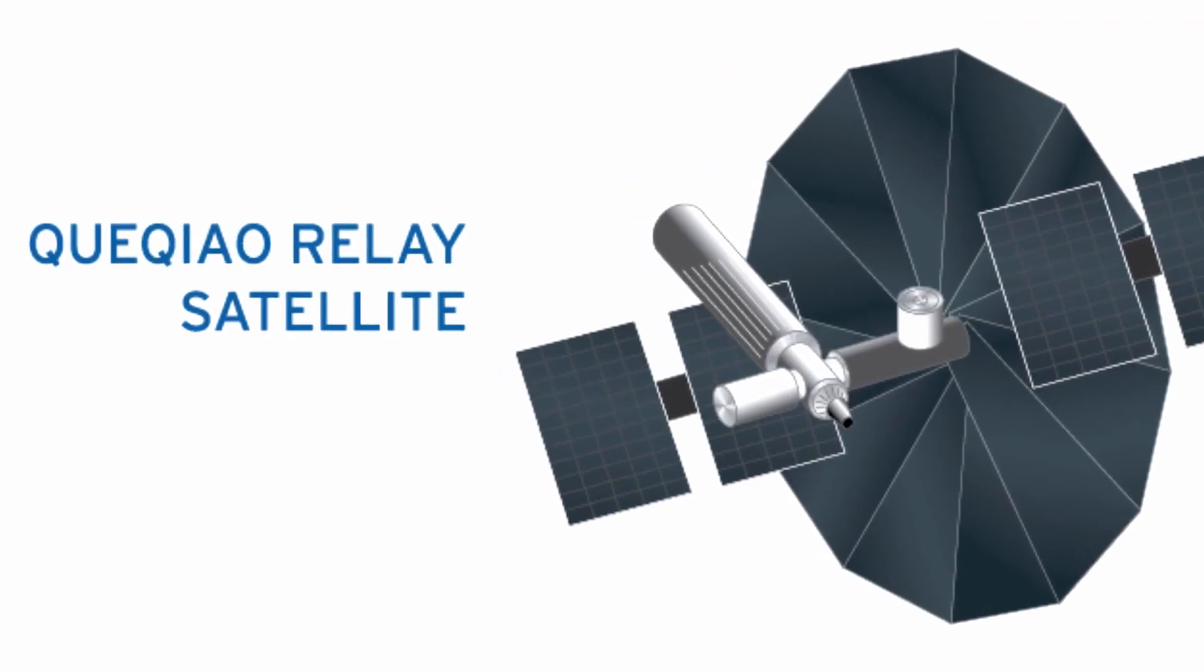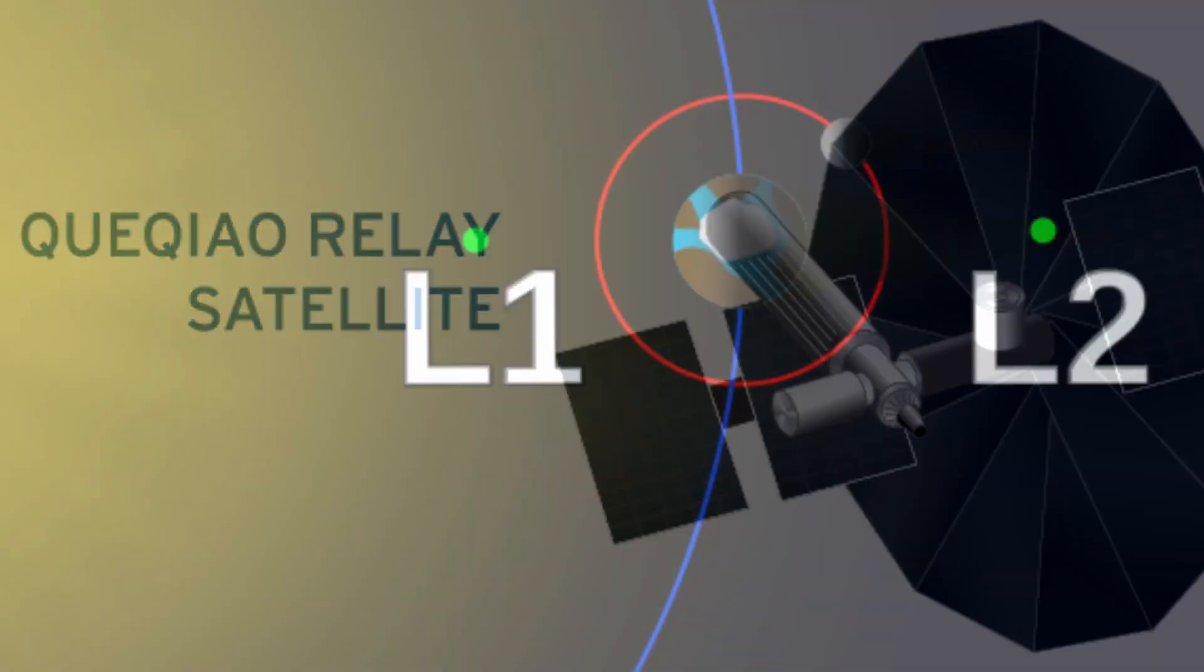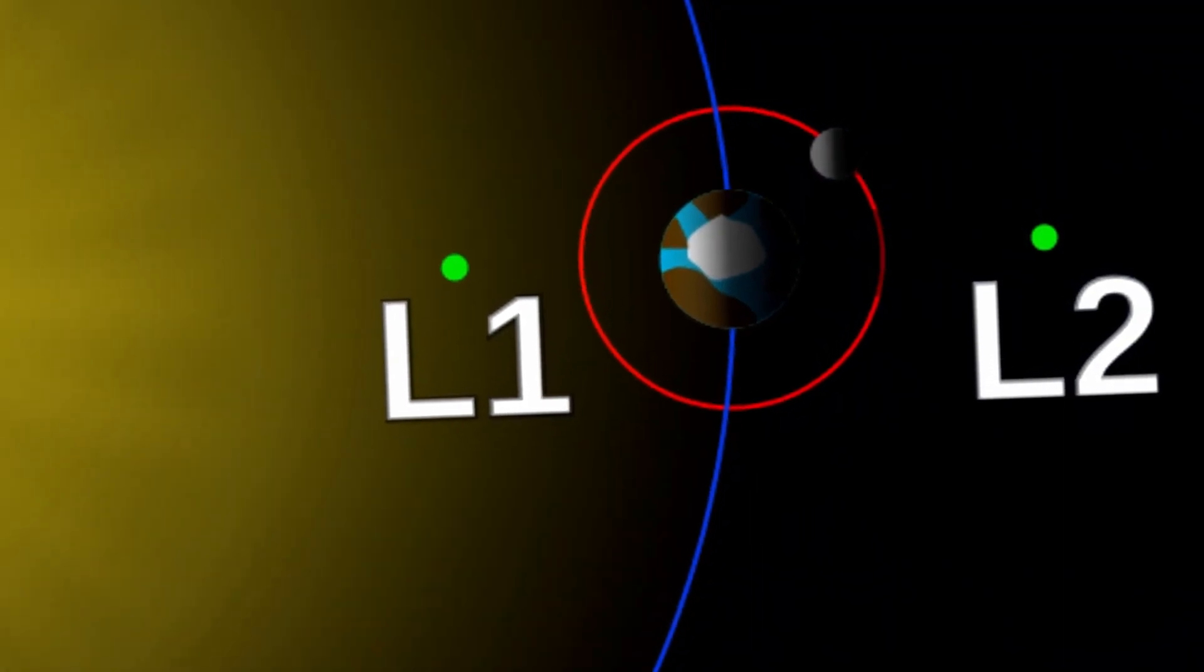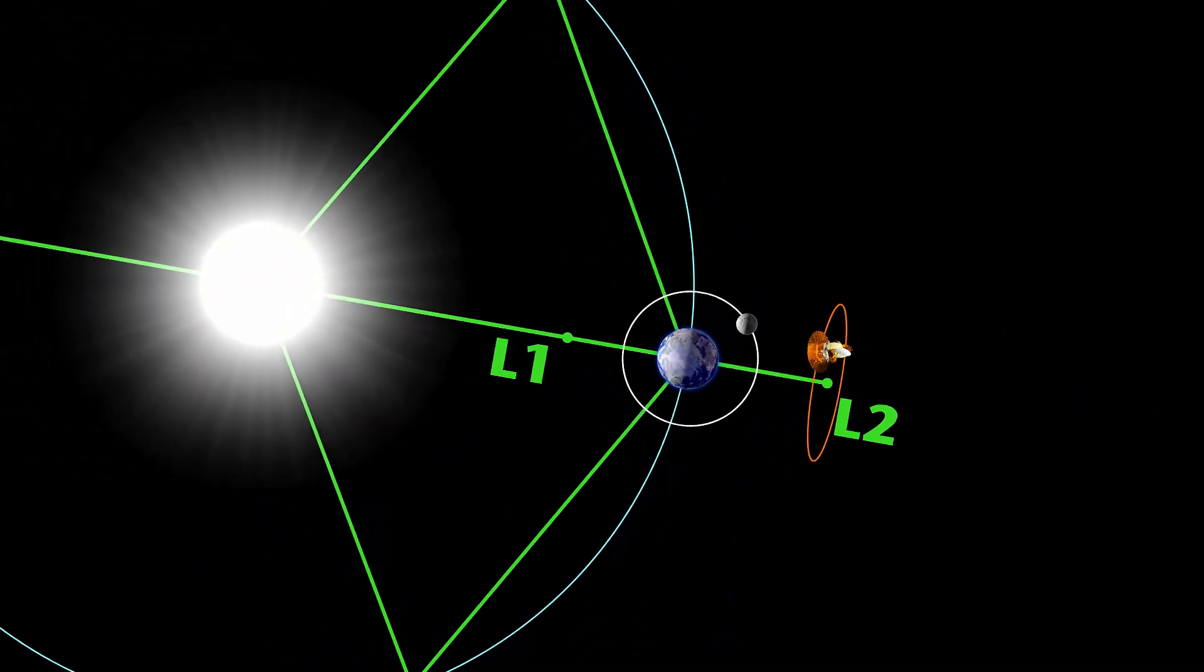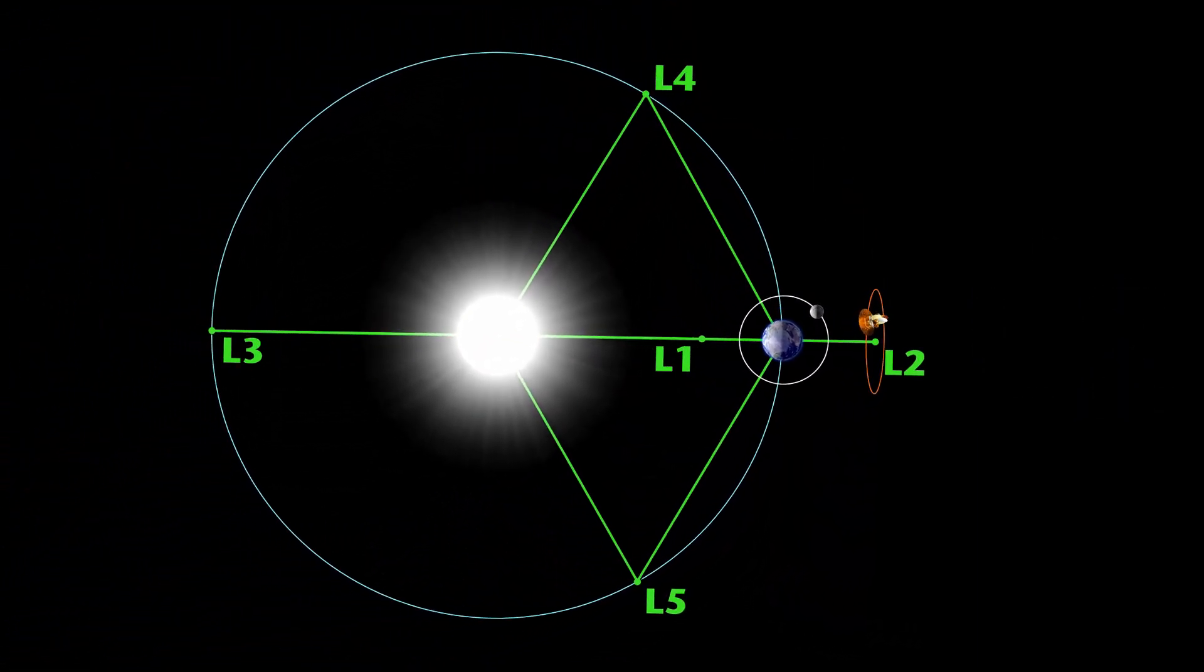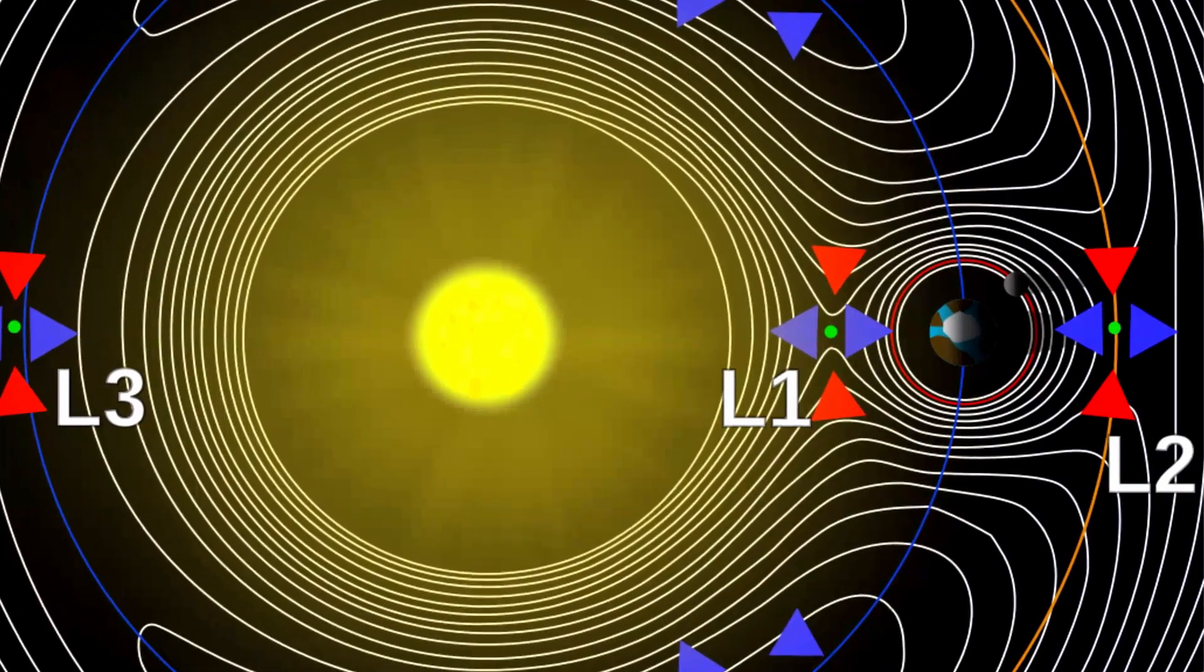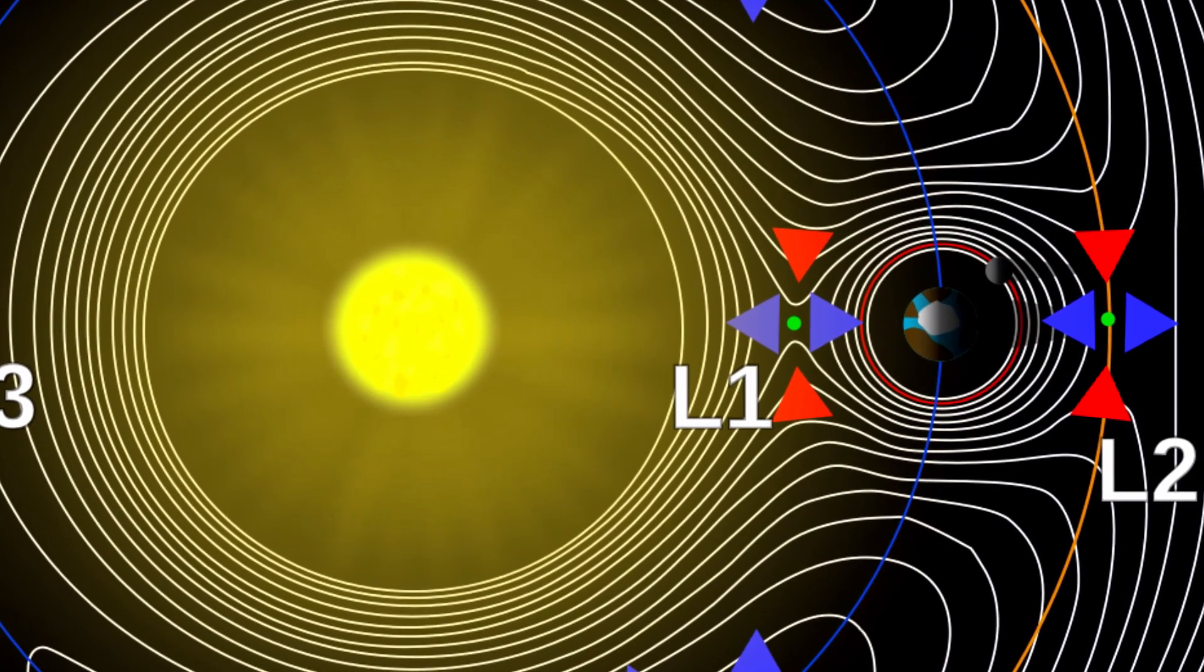China prepared for this project by having placed a relay satellite at the Earth-Moon L2 point. They launched it on May of 2018 into a halo orbit so it can always see the far side of the moon and the Earth at the same time. They can communicate in almost real time with their lander and its rover.